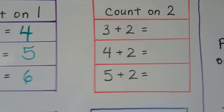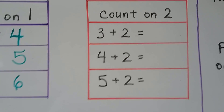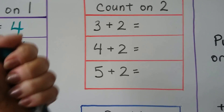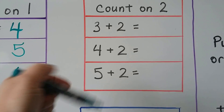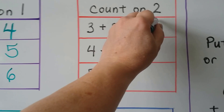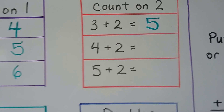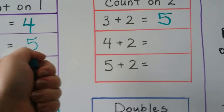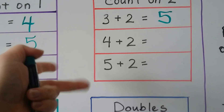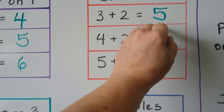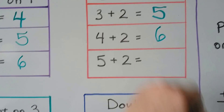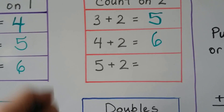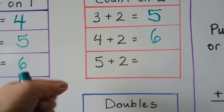We can count on two. We start with the greater addend, the three — three, four, five. Five. We start with the greater addend, four — four, five, six. We count on. Five plus two: five, six, seven.